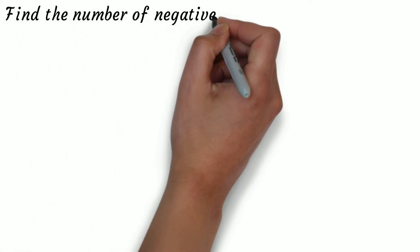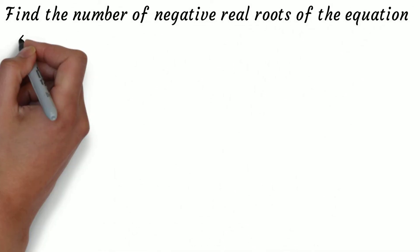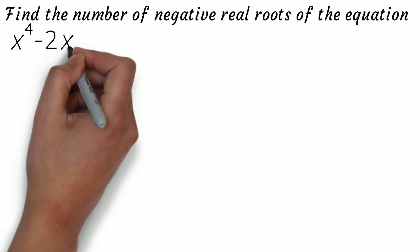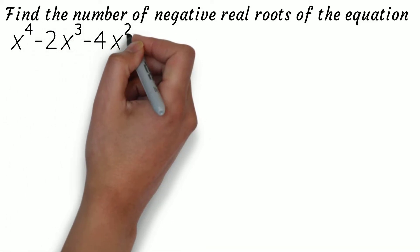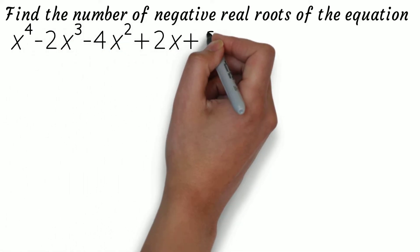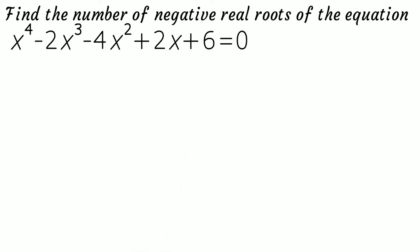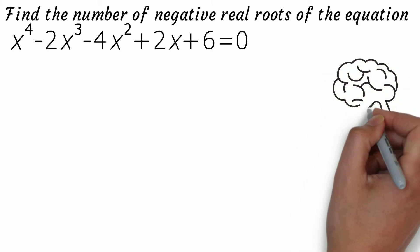Find the number of negative real roots of the equation x⁴ - 2x³ - 4x² + 2x + 6 = 0. Let's get started.